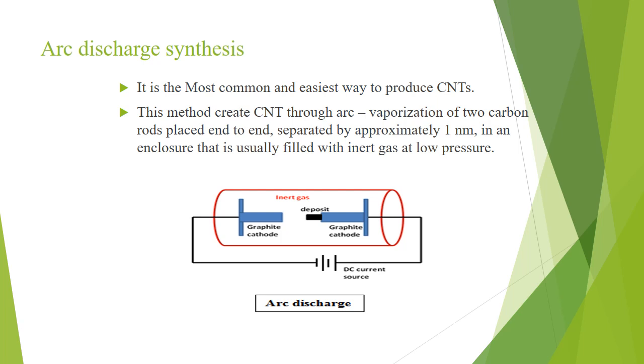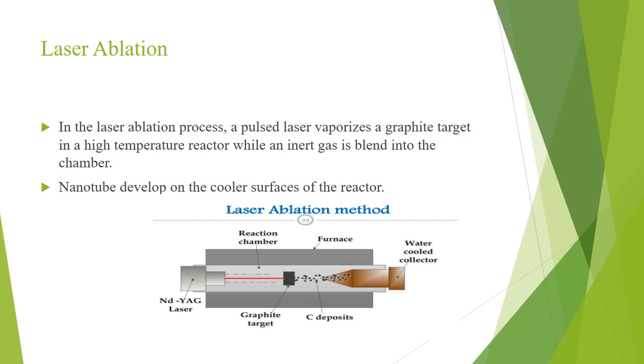Another one is laser ablation method. In this laser ablation process, pulsed laser, that is normally Nd:YAG lasers are used, that vaporize the graphite target in a high temperature reactor, while an inert gas is bled into the chamber. This nanotube will develop on the cooler surface of the reactor.